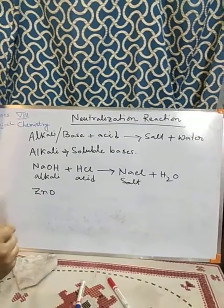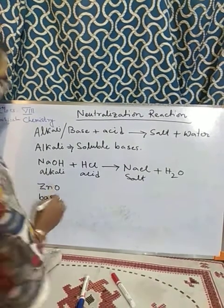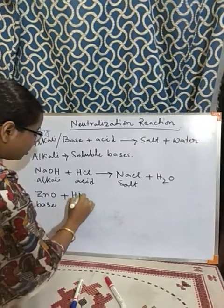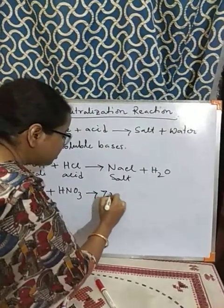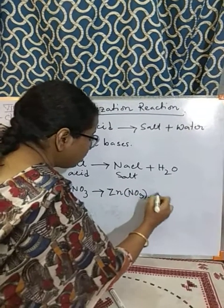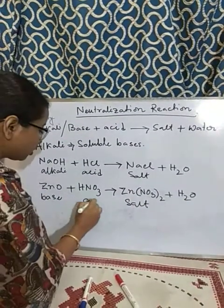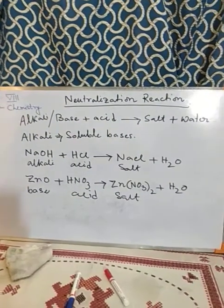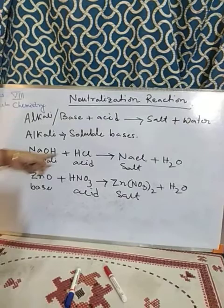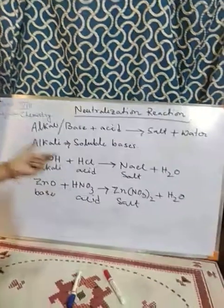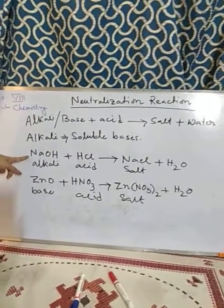Next, zinc oxide (ZnO) is insoluble in water, so it is not an alkali — we call it a base. When zinc oxide reacts with nitric acid (HNO3), it gives zinc nitrate Zn(NO3)2 along with water. This is also a salt and water being produced — the same type of reaction.